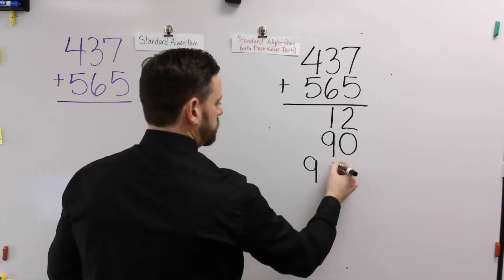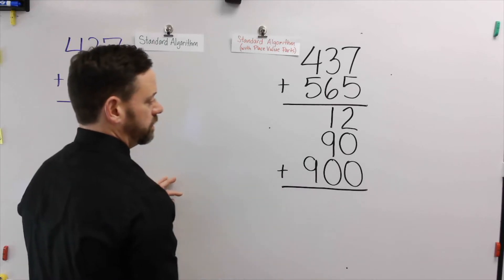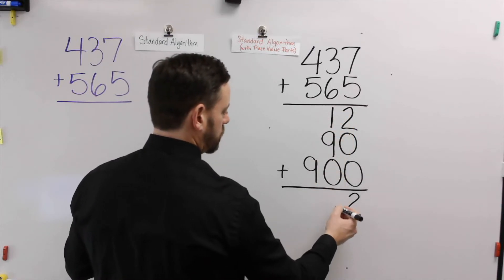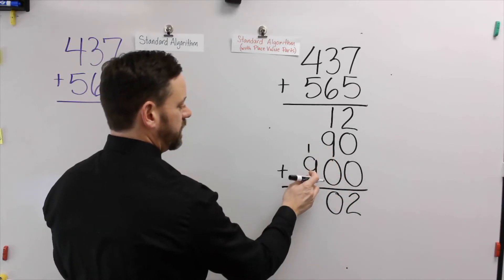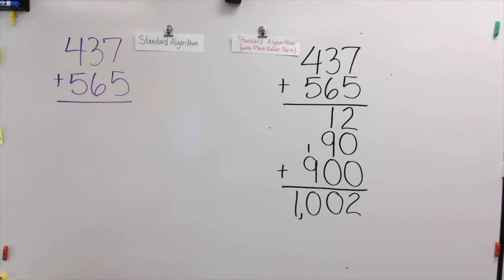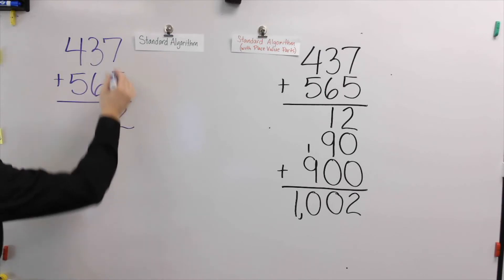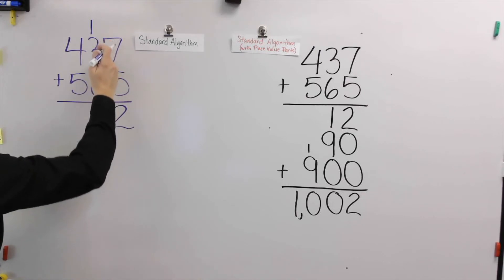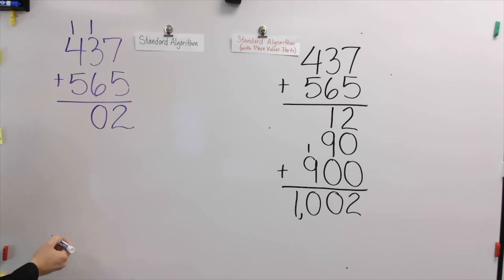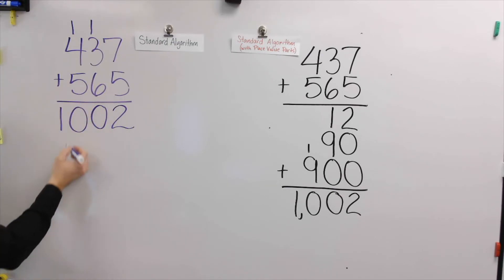400 plus 500 is 900. So you can see I'm stacking the amounts — ones, tens, and hundreds — underneath. Then I draw a line and add all of those parts together. 2 plus 0 plus 0 is 2; 10 plus 90 plus 0 is 100, so I write the 0 here and bring the 1 over; and 900 plus 100 is 1,000. That's how it looks with the standard algorithm with place value parts. With the standard algorithm, you're going to regroup on top of the next column. 7 plus 5 is 12 — write the 2 underneath, put the 10 above. Then add the tens: 30 plus 60 is 90, plus another 10 is 100, so I regroup the 100 and put 0. Then 500 plus 400 plus another 100 is 1,000, giving an answer of 1,002.